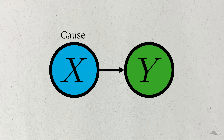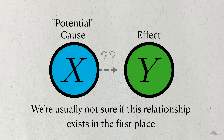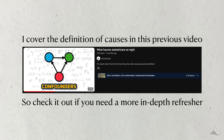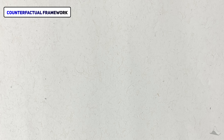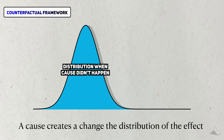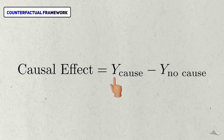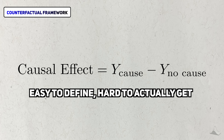I'm going to denote X as the cause and Y as the effect. But to be more precise, X is going to be a potential cause. I'm calling it potential because we're usually interested in figuring out if there is a cause and effect relationship — if I just call it a cause, it sort of implies that the relationship is already there. For this video, we'll stick to the counterfactual framework used in statistics. A cause is something that changes the distribution of the effect — it's the difference between the outcome when the cause happens and the outcome when it doesn't. Unfortunately, causal relationships aren't easy to find.